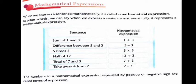Next, difference between 5 and 3. So difference means subtraction. So 5 minus 3. 5 times 3. 5 times 3 means 5 into 3.